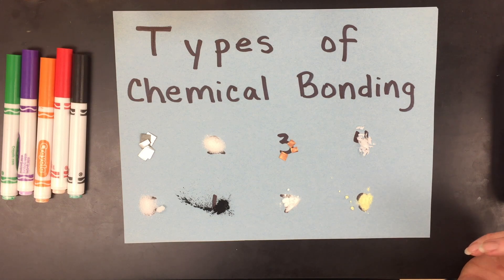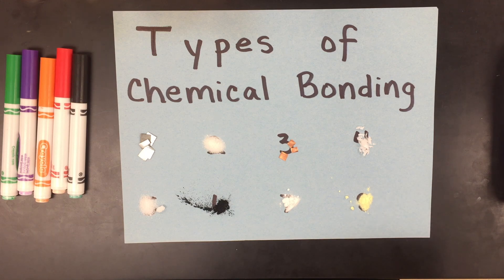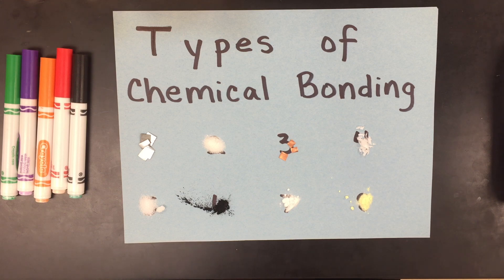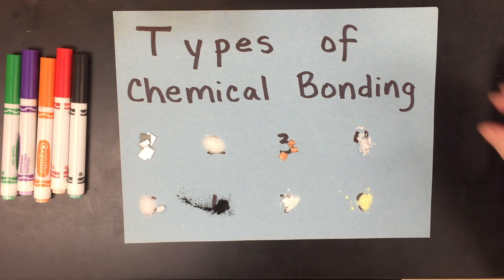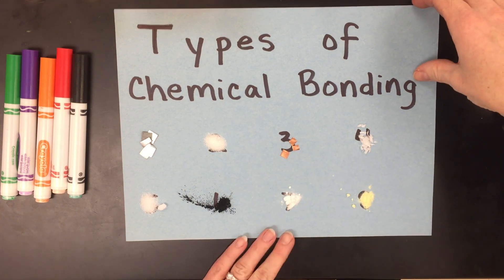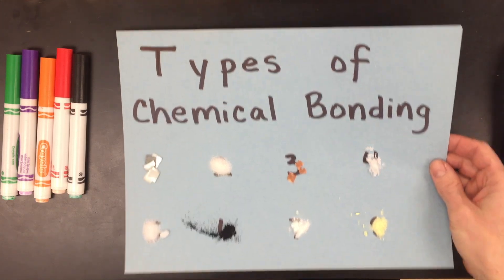The most common things you'll check are solubility, conductivity, dissolving in water or other substances, or heating it to see if it's combustible. The foldable is going to include all the information necessary to determine the chemical bond type of substances you might encounter in homework problems or in lab.